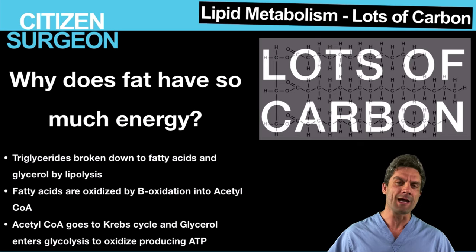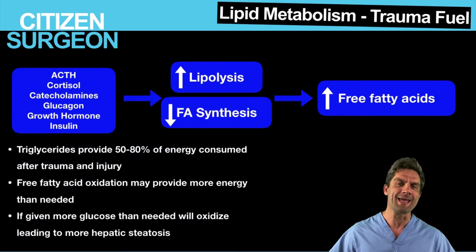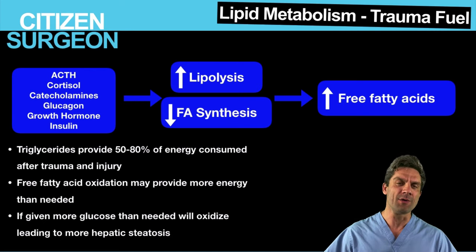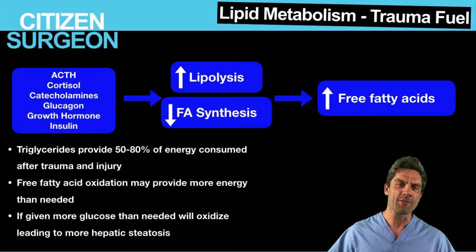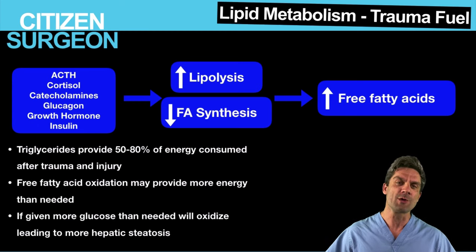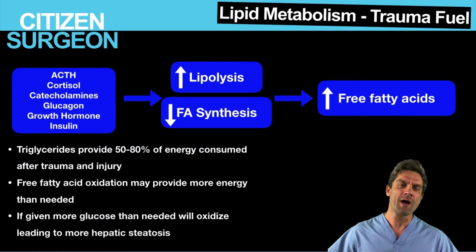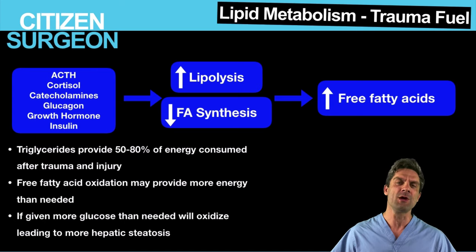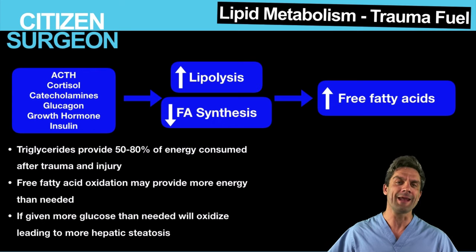The stress response — with increased ACTH and increased cortisol — leads to lipolysis, breaking down those triglycerides and increasing the fatty acids circulating throughout the body. One thing to keep in mind is that with all of this triglyceride breakdown, you're creating so much energy that you don't need any more. That's why — and we'll talk about this in the next video — when you're giving dextrose in your TPN, you can give too much. If you give too much, you can have overload, and that'll lead to hepatic steatosis.